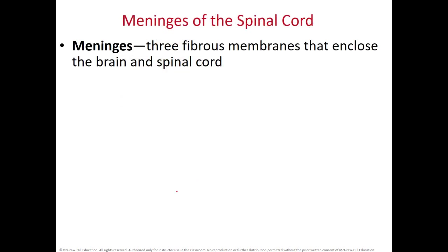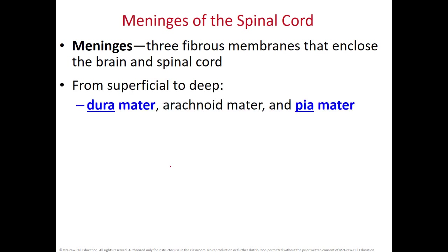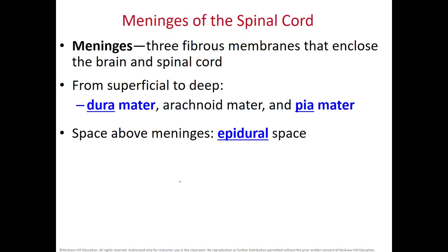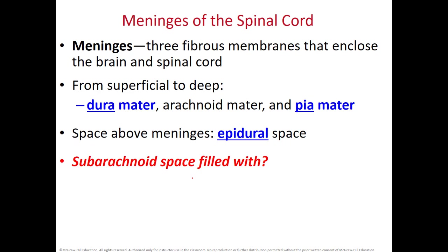Your spinal cord is covered with the meninges — three connective tissue membranes around both the brain and the spinal cord. From the most superficial you have the dura mater, the arachnoid (usually back to back with the dura), and then the pia mater, which is actually on the spinal cord. The space above the meninges is the epidural space, where you can inject anesthesia. There is no epidural space around your brain, only around your spinal cord.